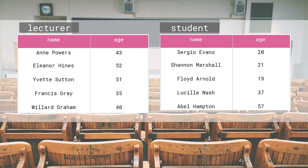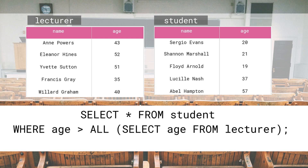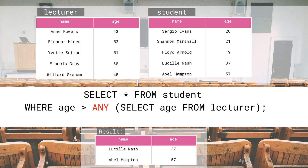Now we have a slightly different problem. We want to see students who are older than any of the lecturers. In other words, we previously wanted to see students that would be older than all of the lecturers, and now we want to see students even if there is only a single lecturer younger than them. The query we'll write will be very similar to the previous one. The only difference is that we need to change age > ALL to age > ANY. Let's run the query. We now have two rows instead of one. Abel Hampton is there as before, but we can also see Lucille Nash who is 37. She was shown in the result because there is a single lecturer, Francis Gray, who is 35, which means he is younger than Lucille.